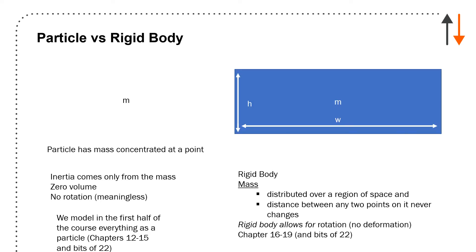So here's a typical rigid body we'll look at in the course, say a rectangular plate, some mass with a width of W and a height of H.